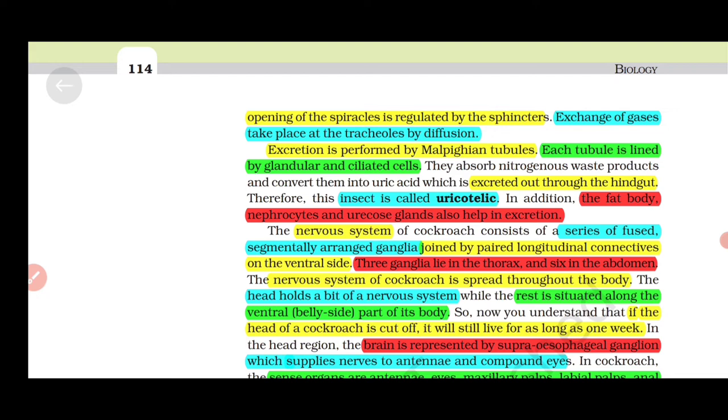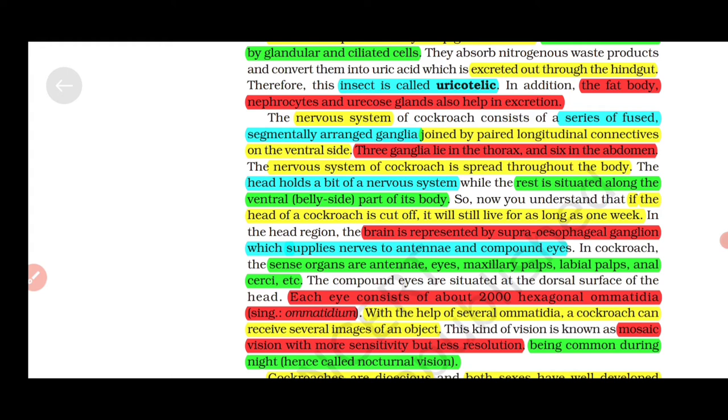Excretion is performed by malpighian tubules. Each tubule is lined by glandular and ciliated cells and waste is excreted out through the hindgut. The insect is called uricotelic. The fat body, nephrocytes, and uricose glands also help in excretion. The nervous system consists of a series of fused segmentally arranged ganglia joined by paired longitudinal connectives on the ventral side. Three ganglia lie in the thorax and six in the abdomen. The nervous system is spread throughout the body. The head holds a bit of the nervous system while the rest is situated along the ventral (belly) side. If the head of a cockroach is cut off, it will still live for as long as one week.